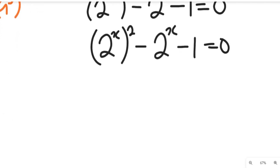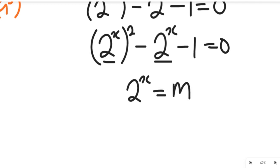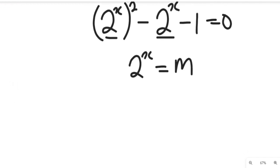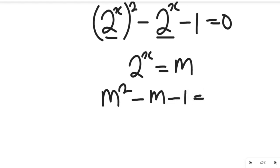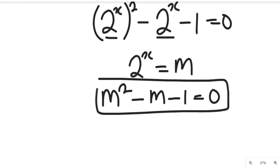From this expression, we can see that 2 to the power of x is a common factor. So we let 2 to the power of x equal to m. Substituting that in, the expression automatically gives us m squared minus m minus 1, equal to 0. This is a quadratic equation.